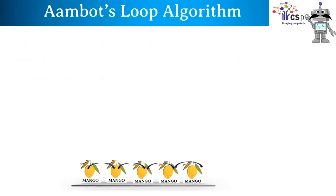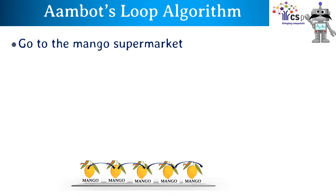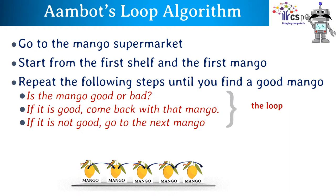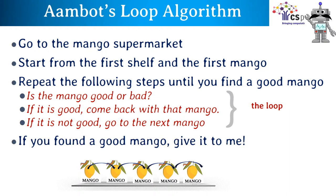As we have seen, Arm Bot was repeating a sequence of steps. Now we will see Arm Bot's loop algorithm. Go to the mango supermarket. Start from the first shelf and the first mango. Repeat the following steps until you find a good mango: is the mango good or bad? If it is good, come back with that mango. If it is not good, go to the next mango. If you found a good mango, give it to me.